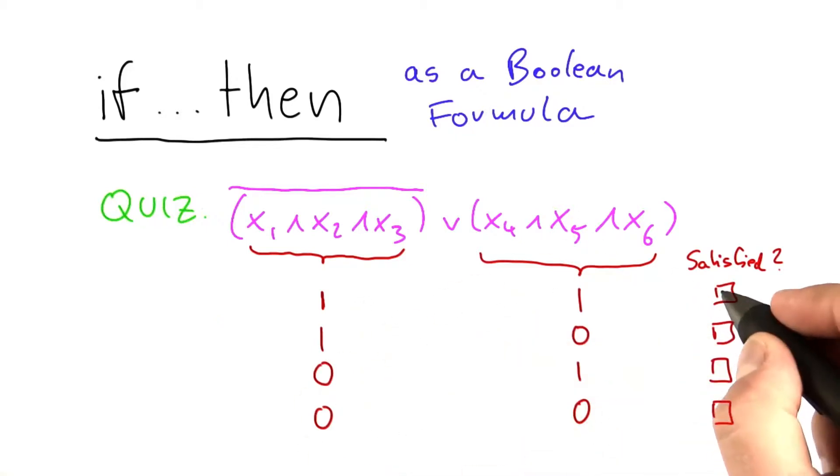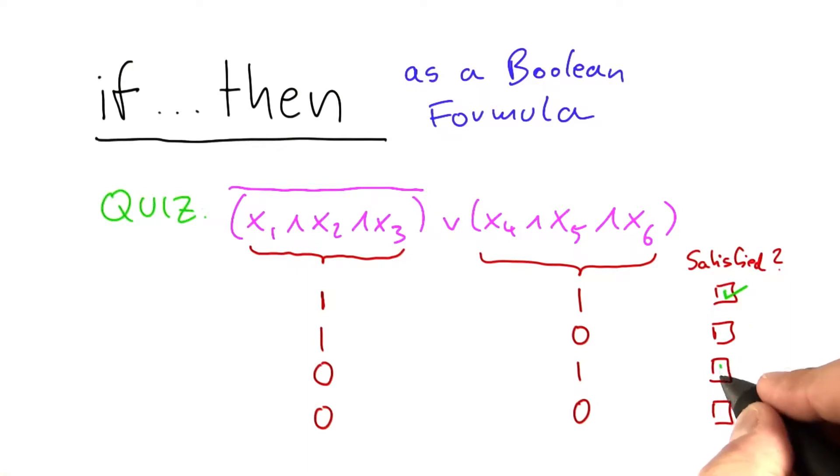So the Boolean formula here is almost always satisfied. It's satisfied in this case over here. It's satisfied in this case over here and this one. The only one where it's not satisfied is this one here.